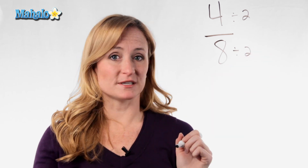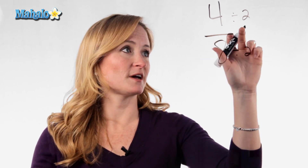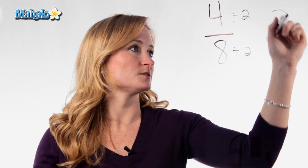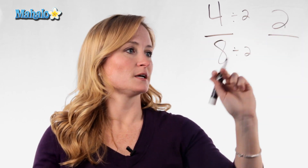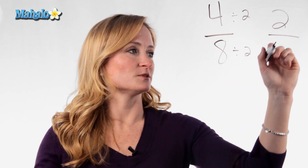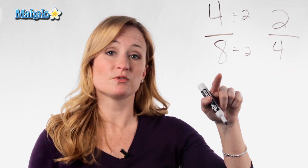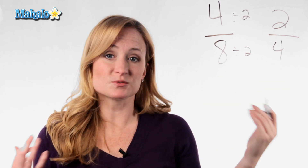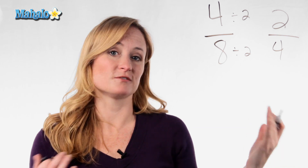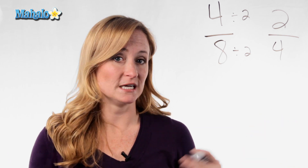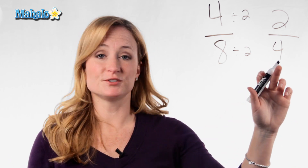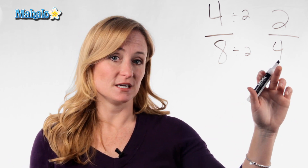So if I were to divide the top and the bottom by two, four divided by two is two, and eight divided by two is four. Now, while that is a reduced answer, it is a smaller fraction of equivalent value, but this is not reduced completely.